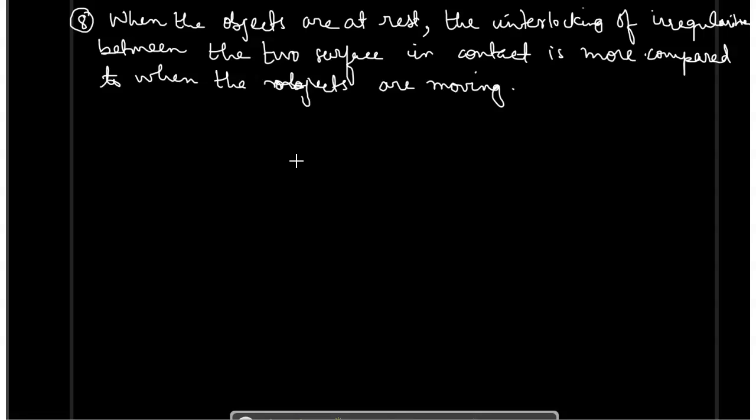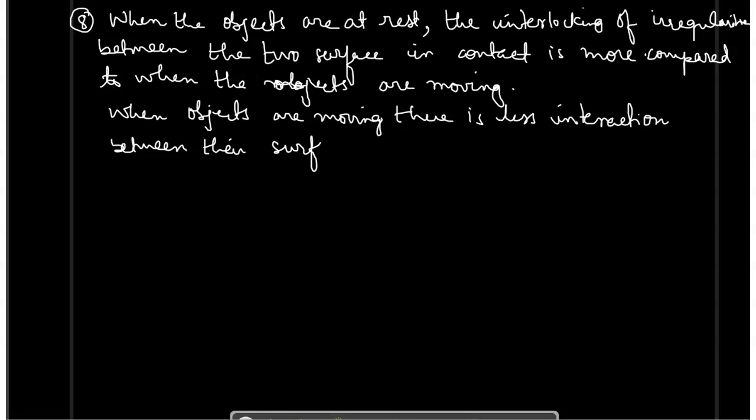So what will happen? When objects are moving, there is less interaction between their surfaces. That is why sliding friction is less than static friction.